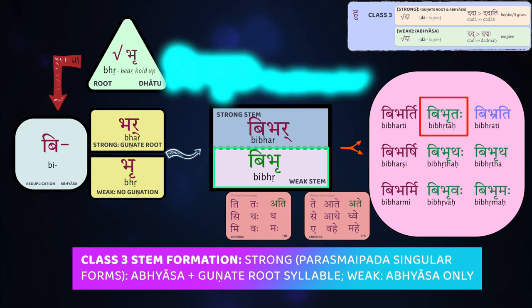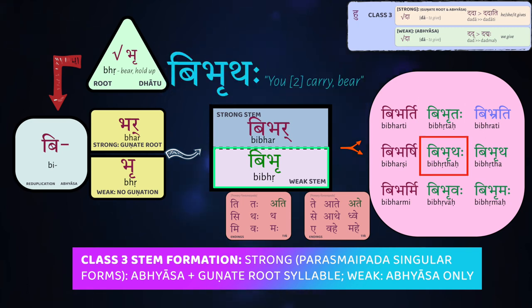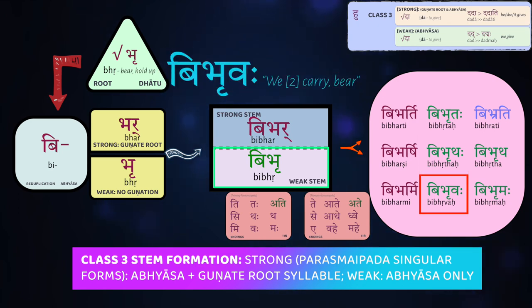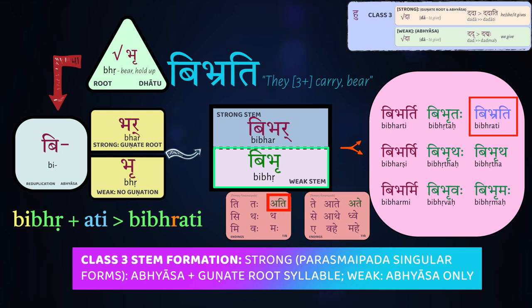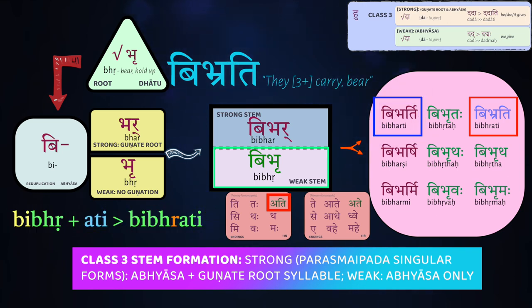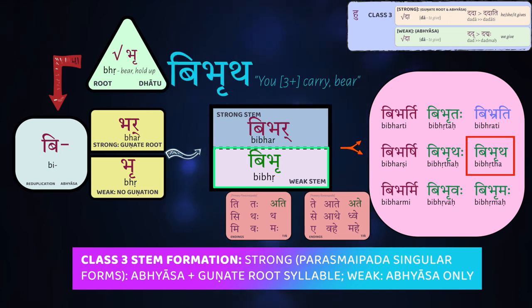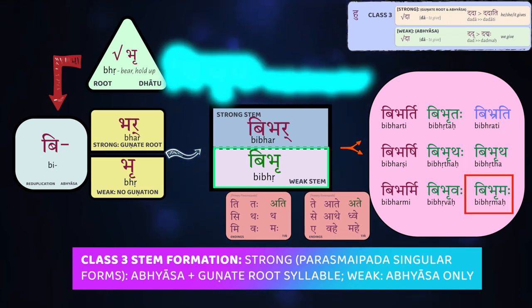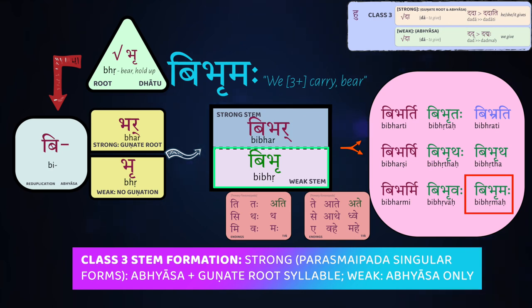For the weak forms: bibhṛtaḥ — 'the two of them bear.' Bibhṛtaḥ — 'the two of you bear.' Bibhṛvaha — 'we both bear.' For the third person plural, the ending is -ati, not -anti, so with sandhi it becomes bibhrati — 'they bear.' Notice the vocalic ṛ switches to a consonant ra-kara. The singular is bibharti, the plural bibhrati — very tricky. The others: bibhṛtha — 'you all bear,' bibhṛmaha — 'we three or more are bearing.'